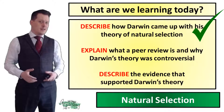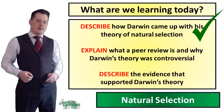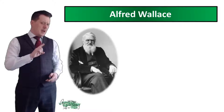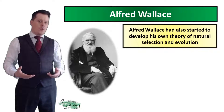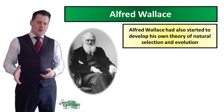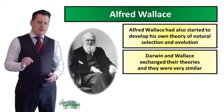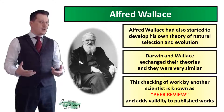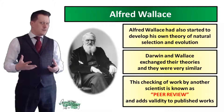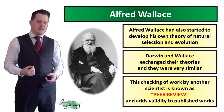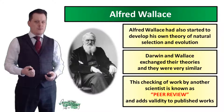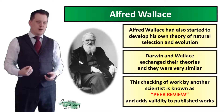Darwin had to get his work checked in a process called peer review, which brings Alfred Wallace into the story. Wallace had also started to develop his own theory of natural selection and evolution. Darwin and Wallace exchanged their ideas, and their theories were very similar. This checking of each other's work by other scientists is known as peer review, and it adds additional validity to your work — people are more likely to believe it if two experts agree.